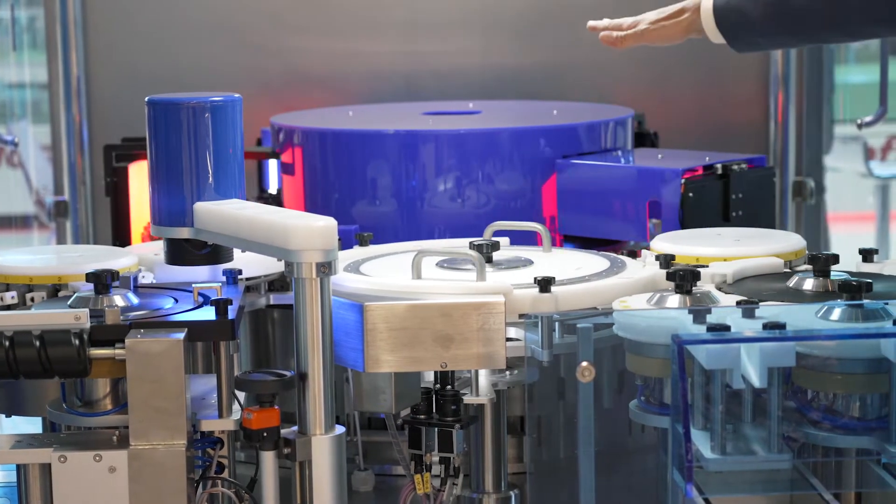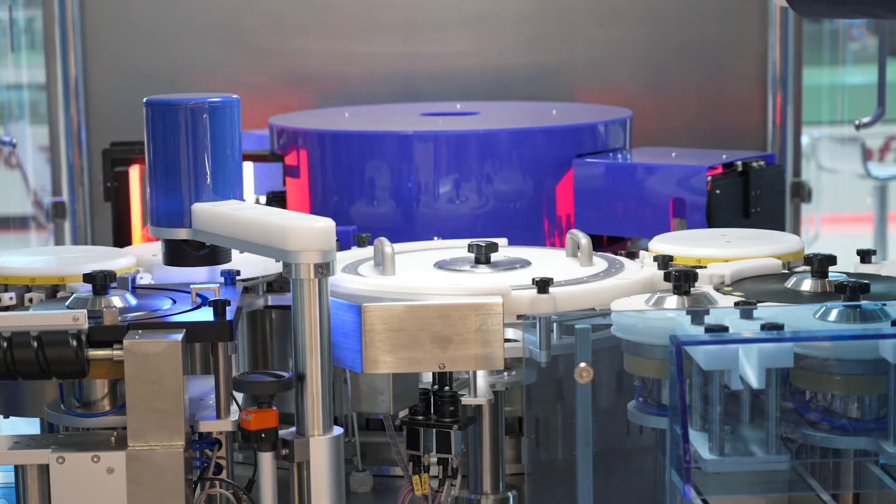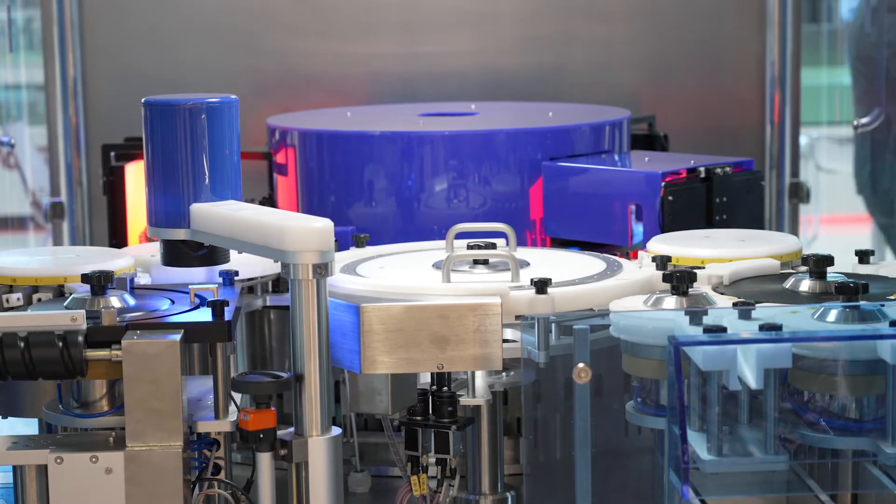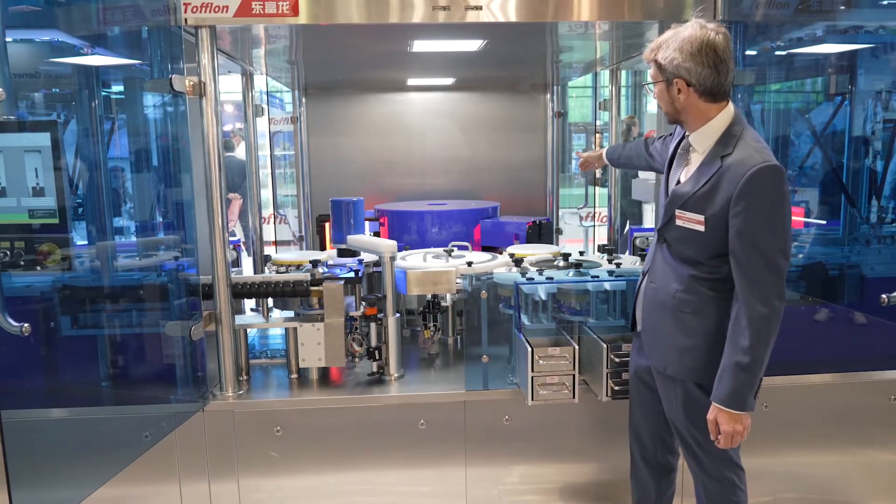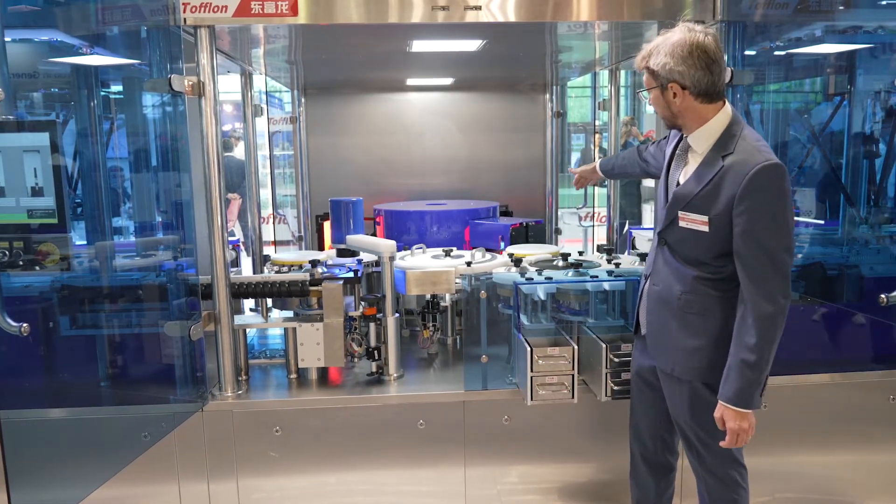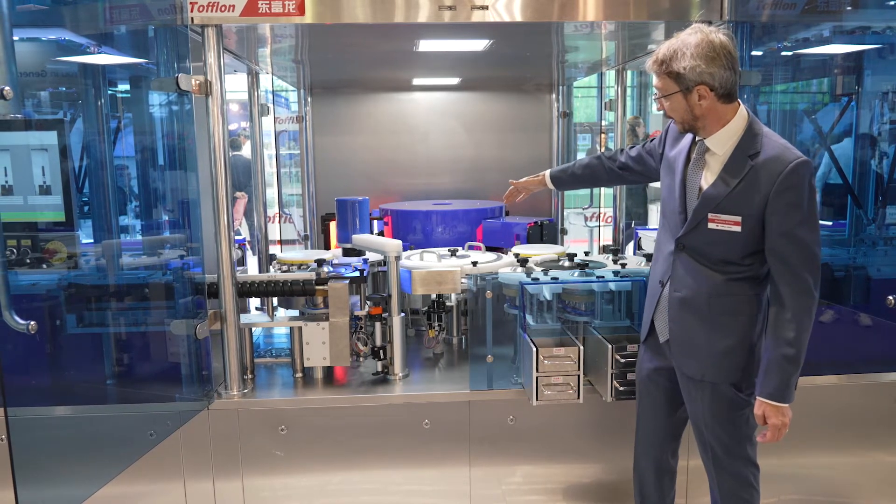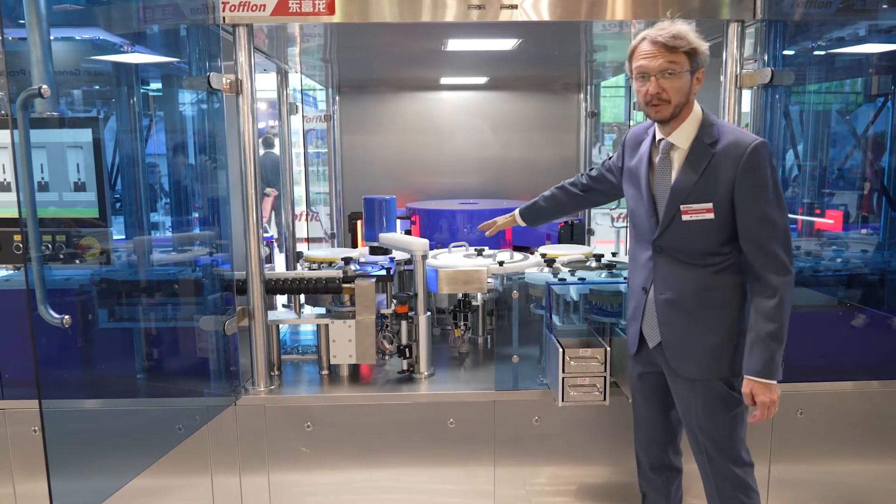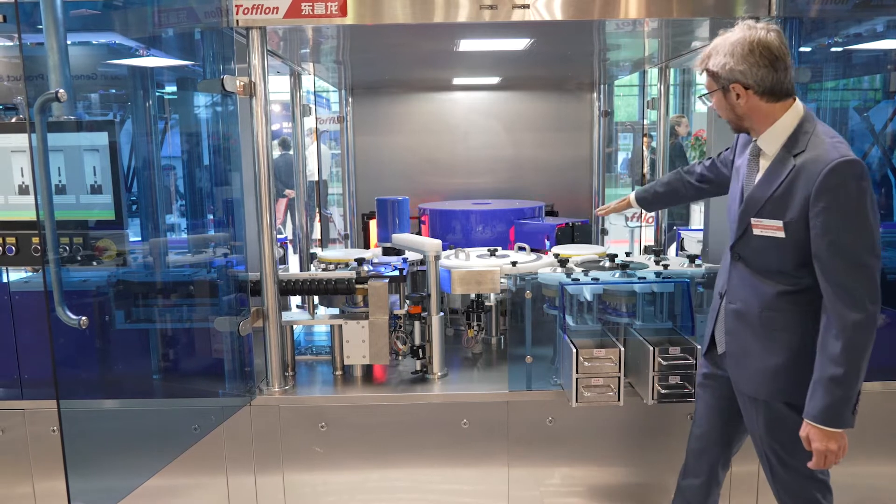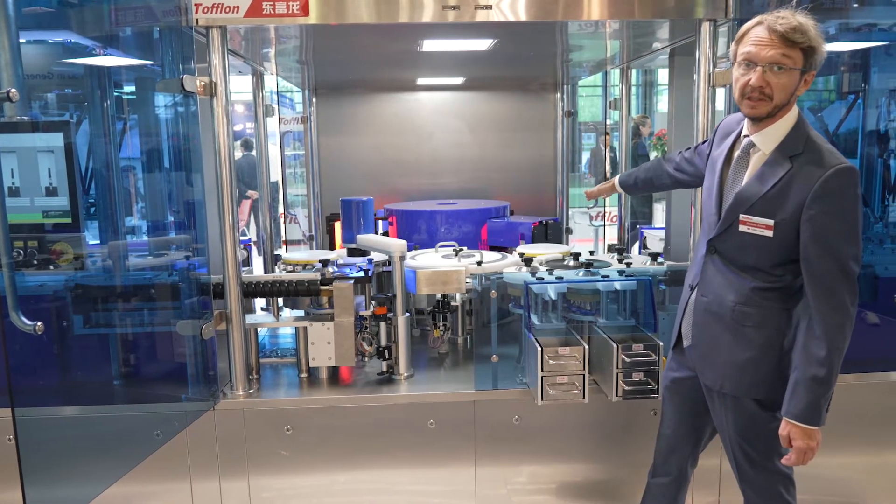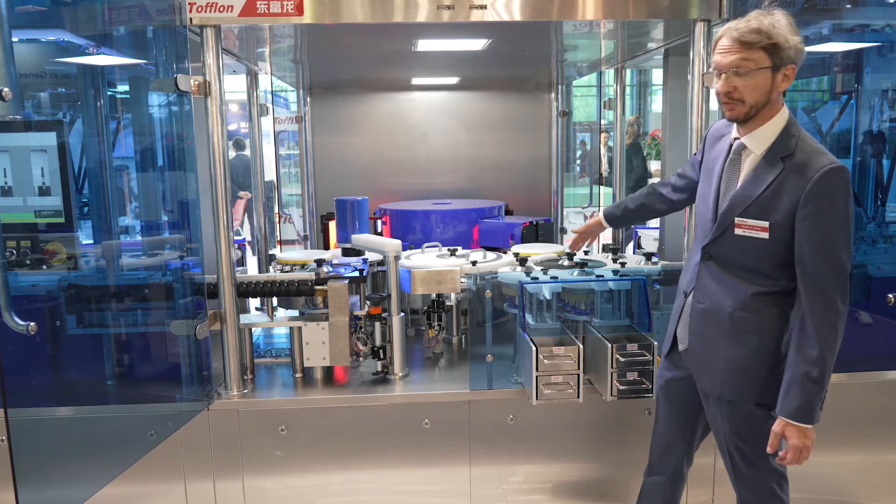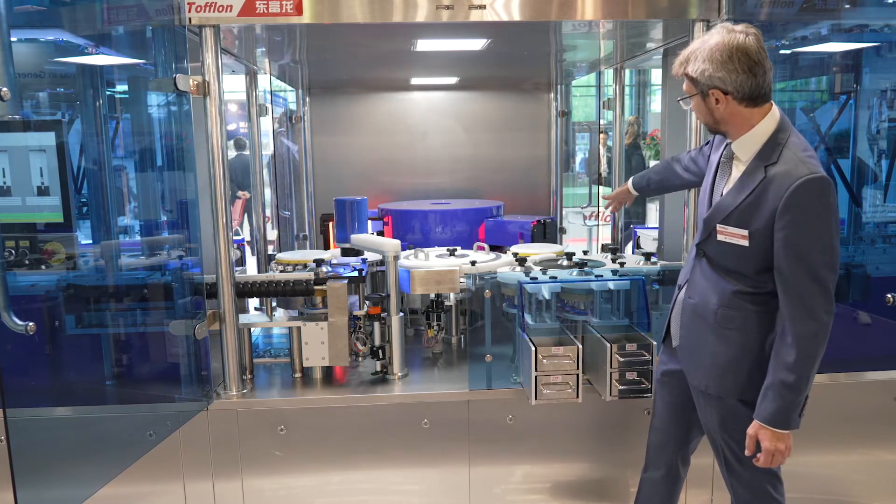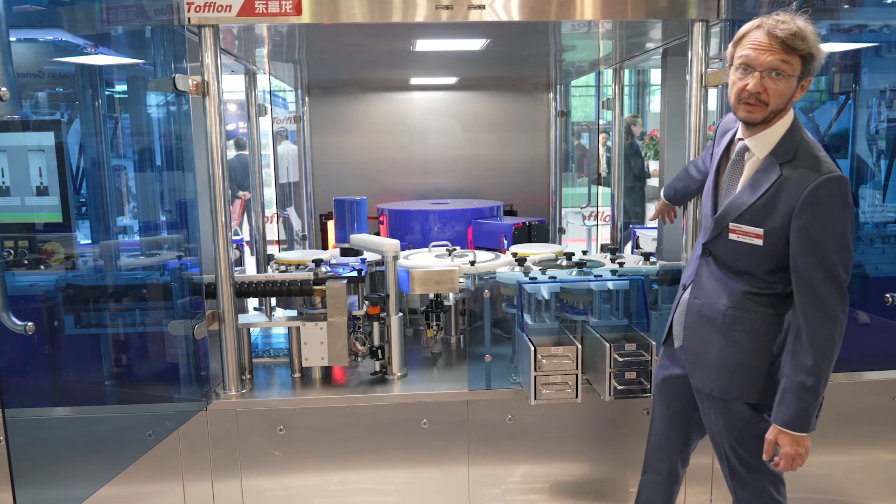We have the first station for cosmetic, the second station is the first particle inspection, then we have a needle shield inspection, and then we have the second particle inspection. Then the syringes are coming out. They are checked once more for the bottom here, and then they are turned again with the needle up. This is the sorting area where the rejects are removed from the stream, and then the good syringes can move on to the next step.